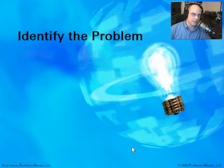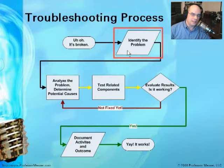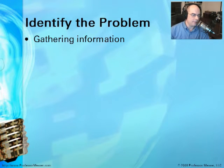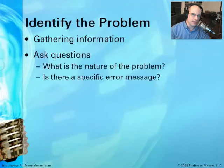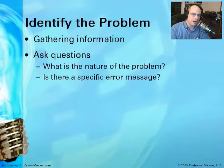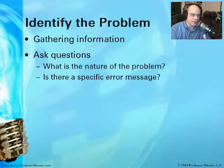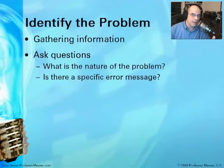The first step is identifying the problem. Once we know something isn't working, we figure out exactly what isn't working. This entire process is really about gathering information — mostly asking questions and trying to determine what somebody is seeing. Most of the time when you're working in an environment, it's not you having the problem. Somebody else is frustrated. You're trying to figure out the nature of the problem, any specific error messages, though often the end user doesn't remember the exact wording.